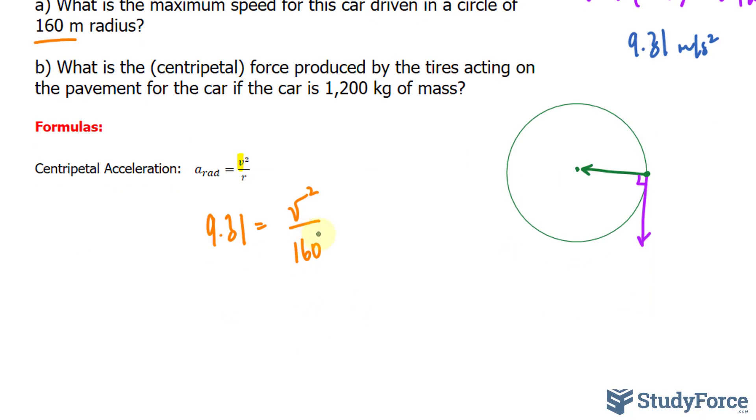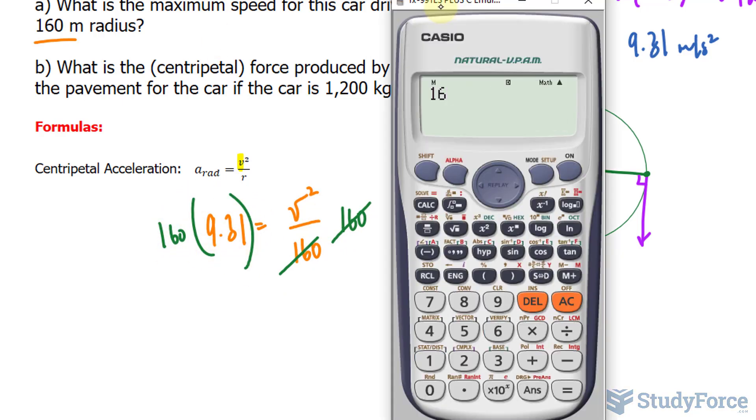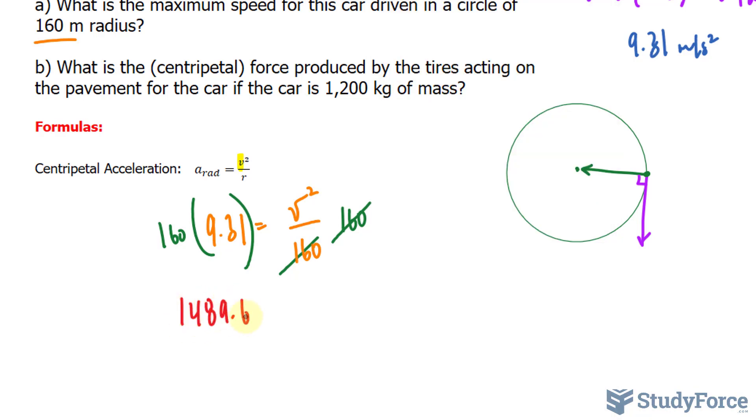So let's solve for v. We can multiply both sides by 160. And after we find the product of what you see on the left side, we square root both sides. So first of all, let me write this down: 1489.6 equals v².